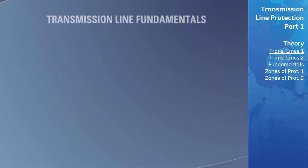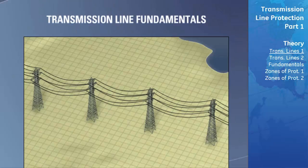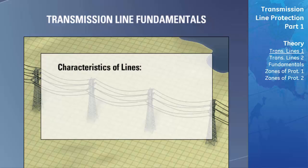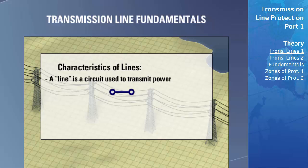We will start this section with a brief overview of transmission lines and their general operation and characteristics in a power system. A transmission line is a circuit that is used to transmit power from one location to another. These transmission lines can span short distances of a few hundred meters to spanning very long distances in the magnitude of hundreds of kilometers.